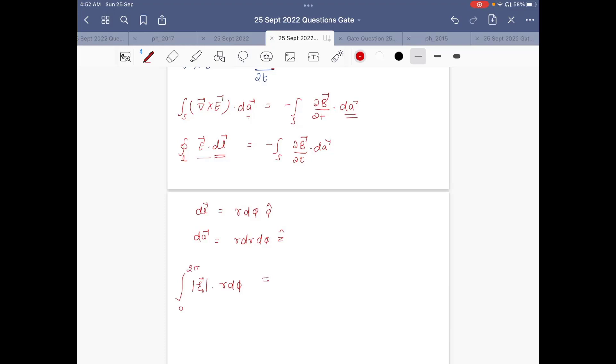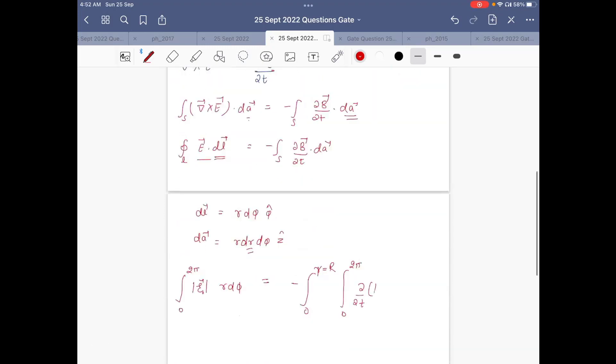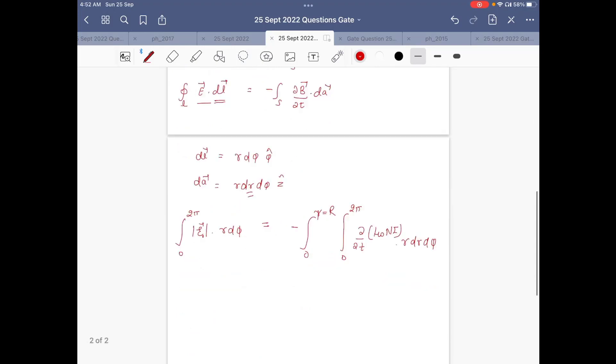On the right hand side it will become minus, r varies from 0 to r where r equals capital R for the surface. We will take it later. And φ varies from 0 to 2π. So ∂B/∂t, B is the magnetic field due to the solenoid which is μ₀NI, into dA which is r dr dφ.